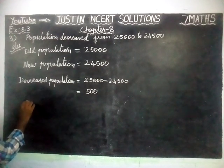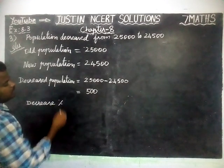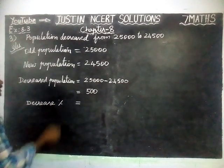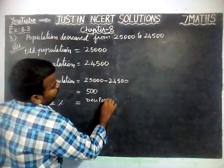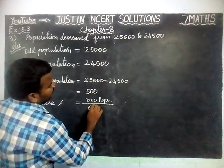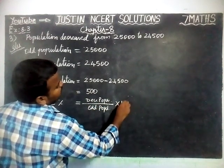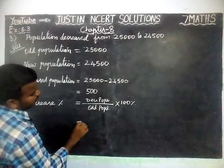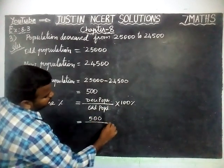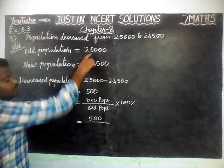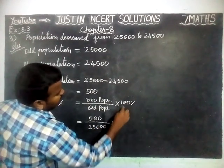Now we are going to find the Decreased Percentage. Decreased Percentage is equal to Decreased Population divided by Old Population, that is 500 divided by 25,000, multiplied by 100.